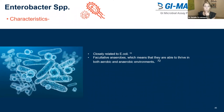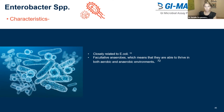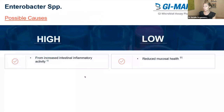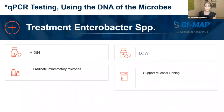Enterobacter is closely related to E. coli and is a facultative anaerobe, meaning it's able to thrive in both aerobic and anaerobic environments. Like Lactobacillus and Enterococcus, Enterobacter can overgrow in the small intestine. It can go high from increased intestinal inflammatory activity — if there are other inflammatory microbes present, we do tend to see Enterobacter become elevated. What can cause it to go low is reduced mucosal health, since it resides in that mucin layer. Treatment: focus on eradicating the inflammatory microbes if high, and if low, support the mucosal lining.